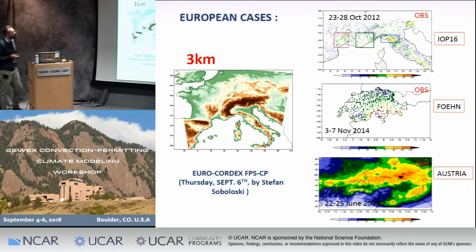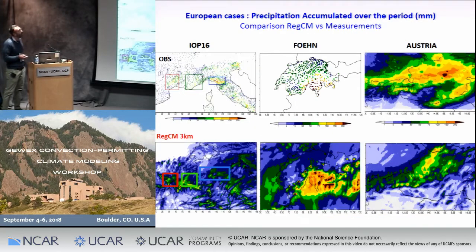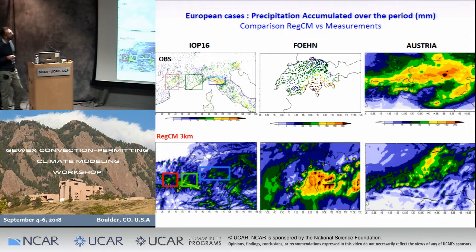The last domain we tested is the European domain. We performed three simulations for three different cases: IOP60, FUN, and Austria. This domain and these three cases are part of a bigger project called Euro-CORDEX FPS in Convection Permitting, which will be presented by Stefan Sibolowski on Thursday. I will show just the results for RegCM. Here I have reported the accumulated precipitation over the period. For the first case, IOP60, this event interests mainly three areas — two in the south of France and one in Liguria, Italy. The model is able to reproduce the maximum position but shows a tendency to underestimate the event over the Ligurian area.